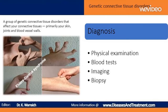Imaging: tests that provide images of the inside of the body can help doctors identify abnormalities including heart function problems and curved bones. These tests include X-rays and computerized tomography scans. Biopsy: in some cases, a doctor will use a biopsy, removing a sample of skin and examining it under a microscope to look for signs of the condition, such as specific genes and gene mutations.